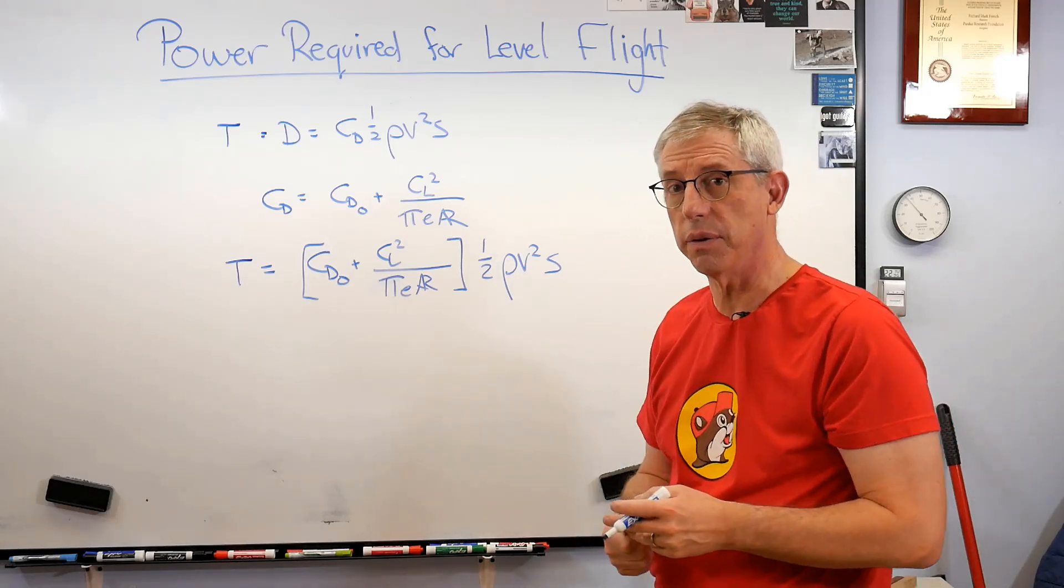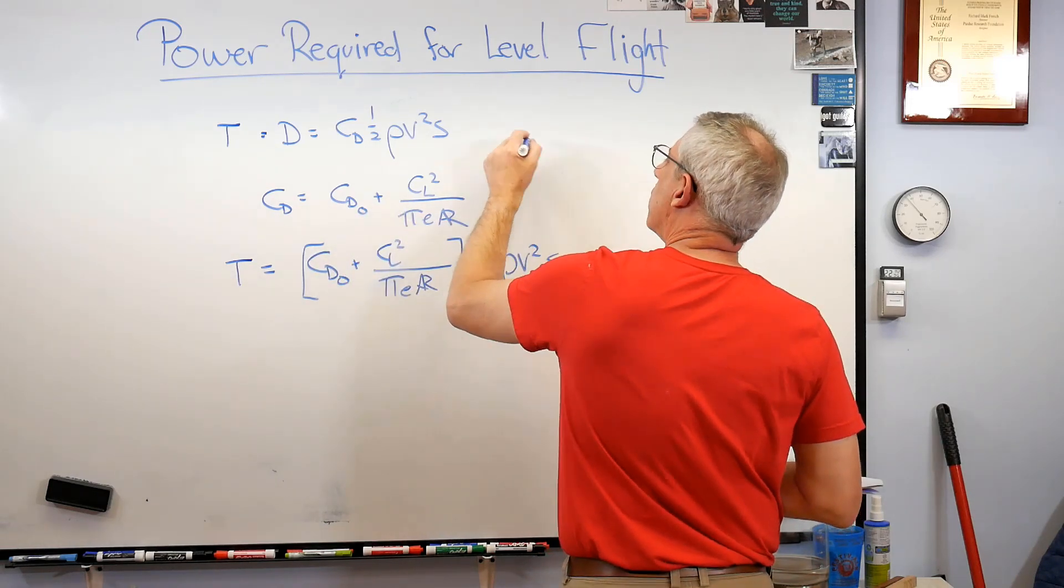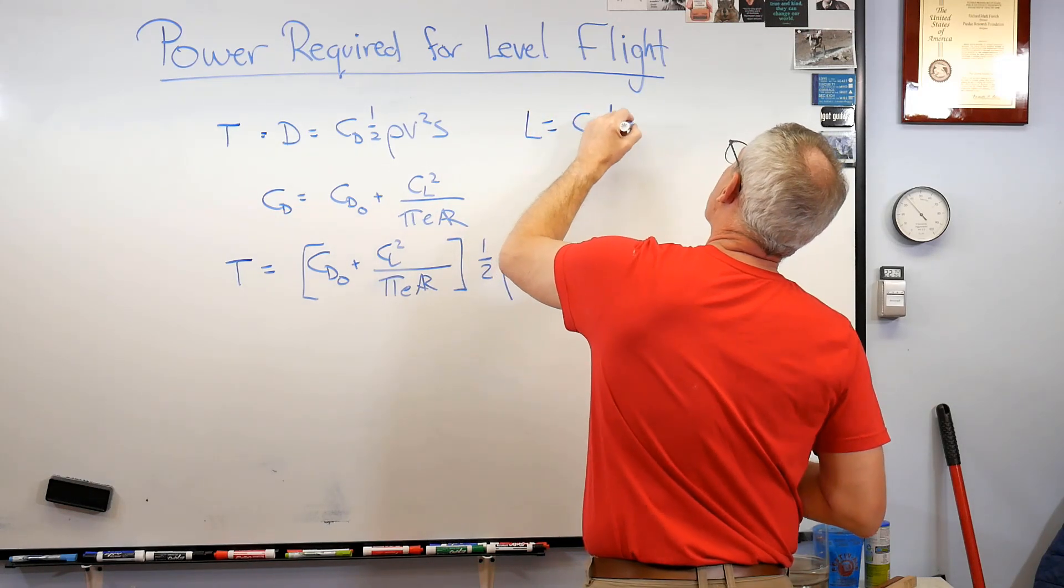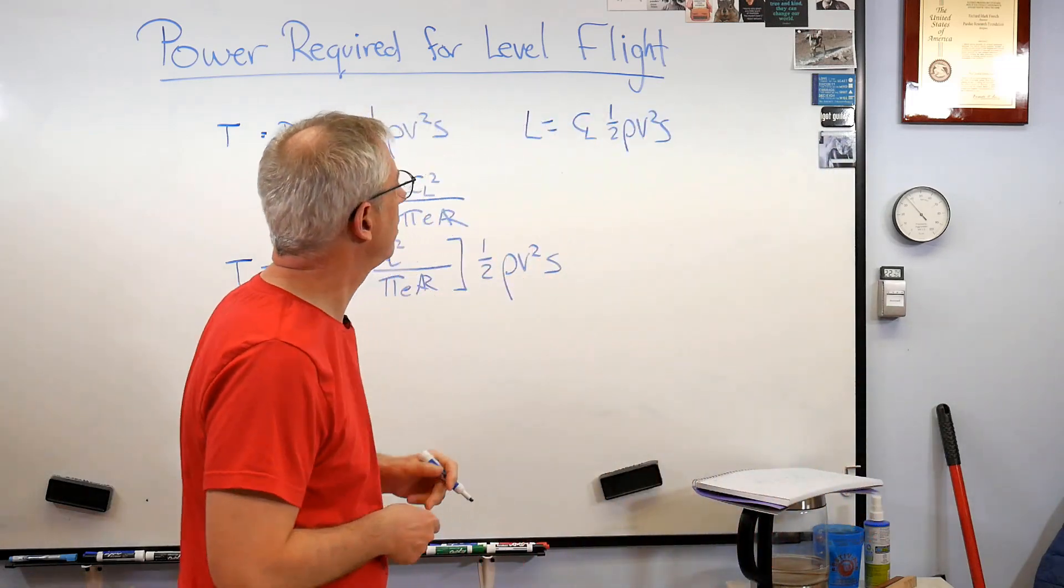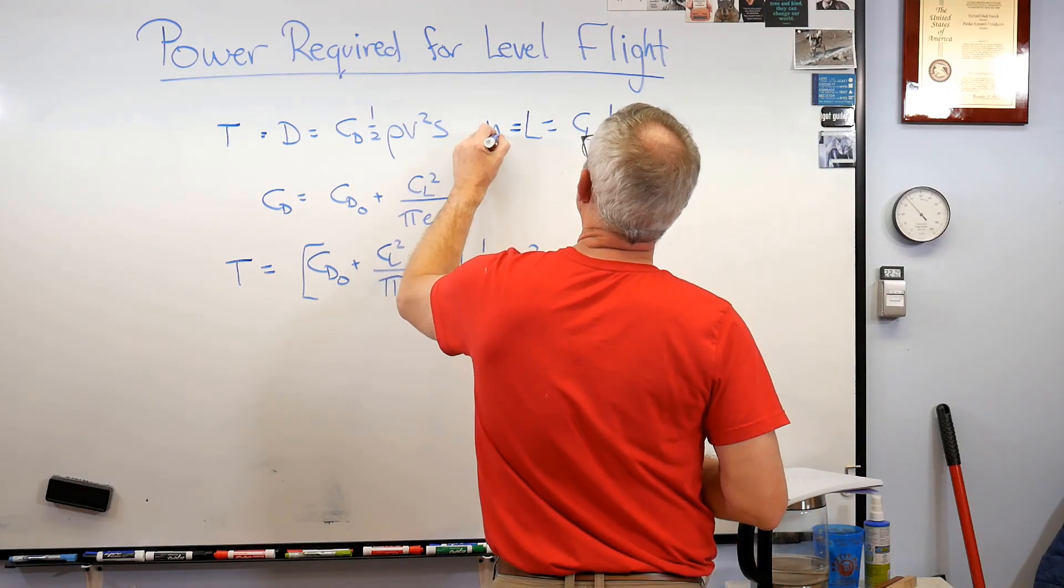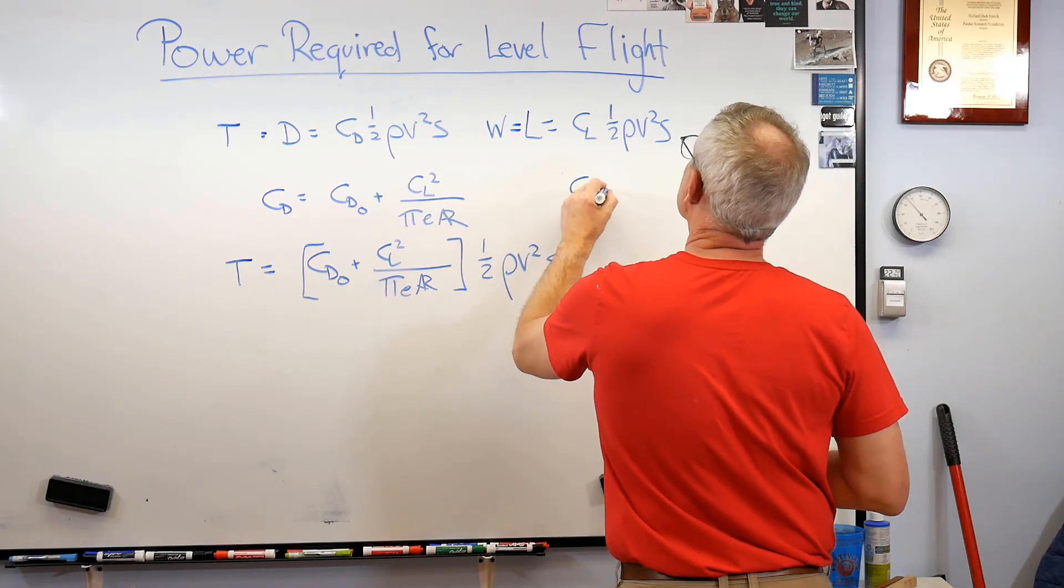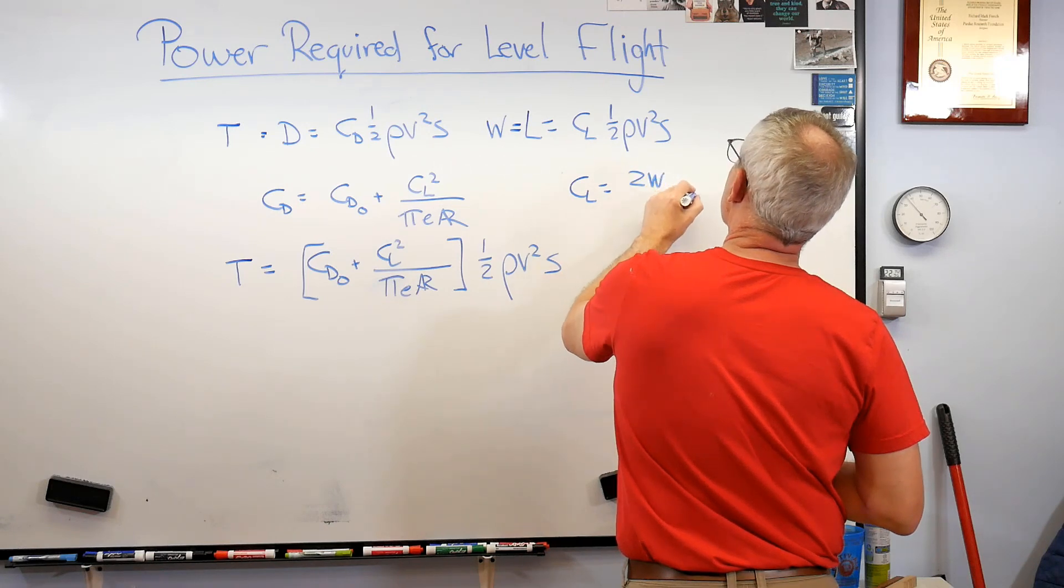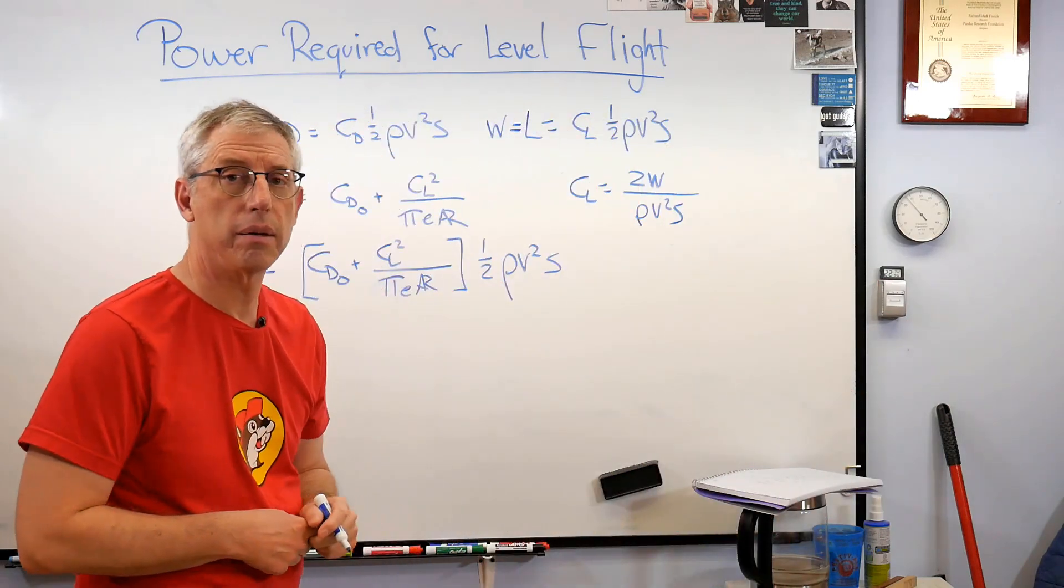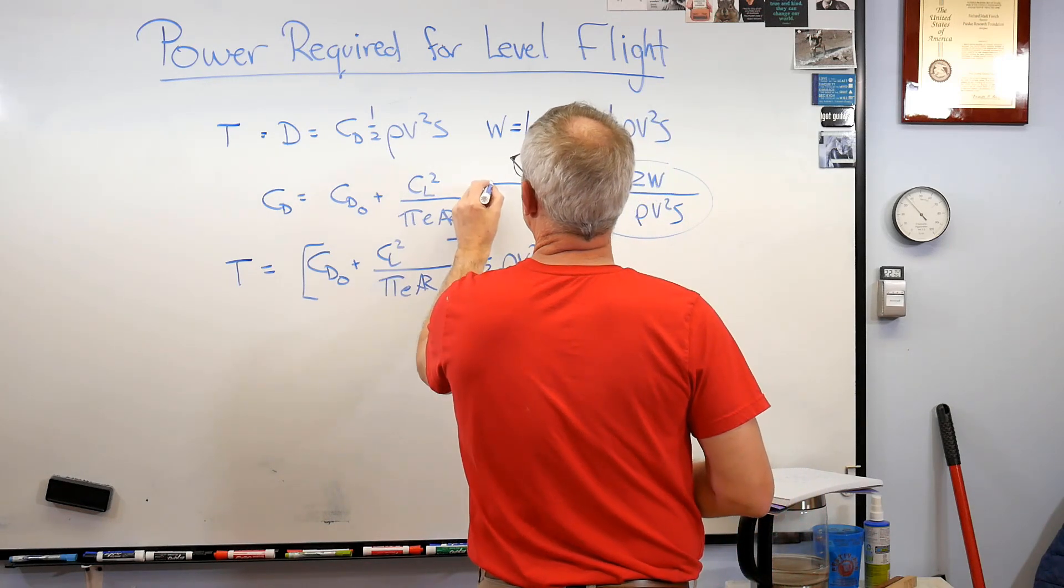Okay I'm closer but there's that CL squared there. Well I don't want CL, I want velocity. Well we've got an expression for lift as a function of CL and velocity. Let's take a look at that for a second. If there's CD there's a drag there, so lift is CL one half rho v squared s. Well I ought to be able to solve that for CL shouldn't I? By the way lift has to equal the weight because we're in level flight.